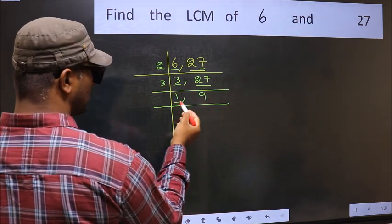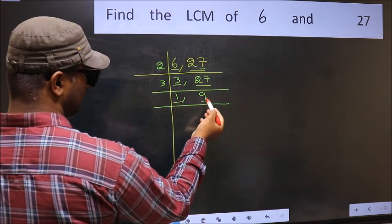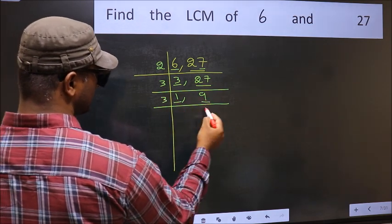Now we got 1 here. So focus on the next number, 9. 9, 3 times 3 is 9.